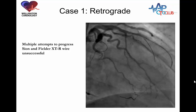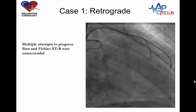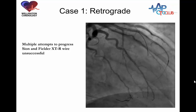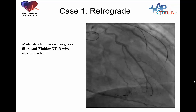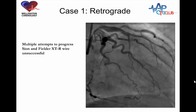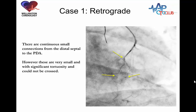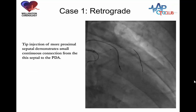We tried with a Sion and then an XTR wire to wire these collaterals and made some progress. But a retrograde injection demonstrates the wire is not in the distal true lumen. It's very important to perform the retrograde injection to confirm the position of the wire before advancing the microcatheter. Examining this collateral, there is a lot of tortuosity and it was unlikely we were going to succeed. We tried for about 10 minutes, but could waste a lot of time with further attempts, so it was time to move to another septal.